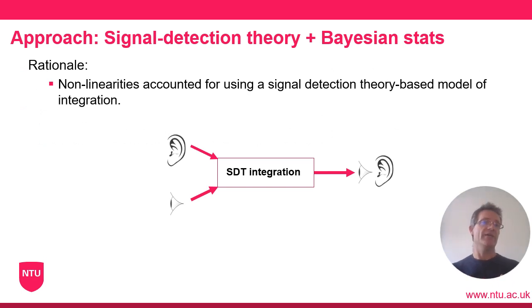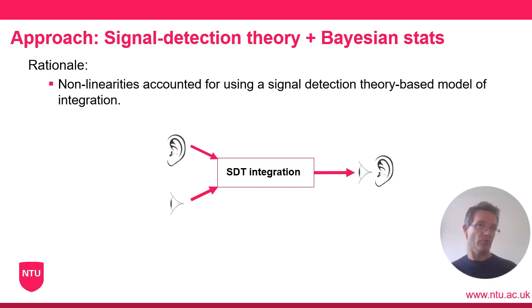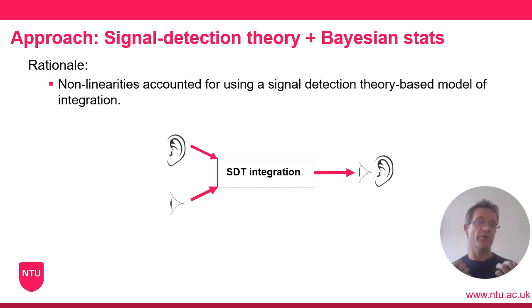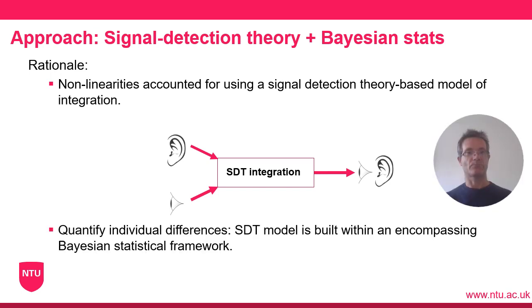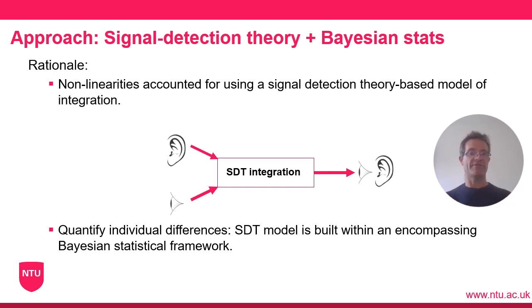The approach we've taken is to combine a signal detection theory approach with a Bayesian statistical framework. The rationale is that all these non-linearities might be accounted for by using an appropriate signal detection theory based model of integration. We then quantify individual differences by building our signal detection model within an all-encompassing Bayesian statistical framework.